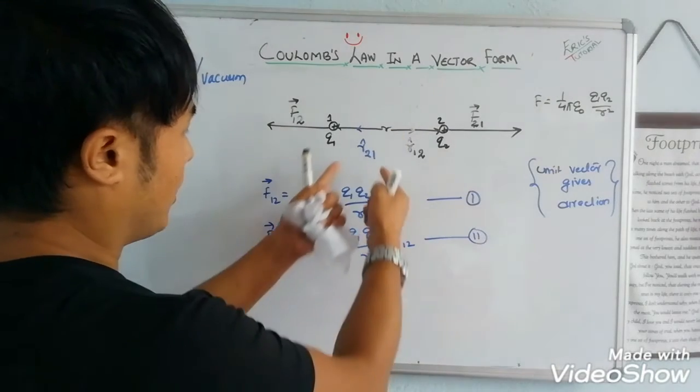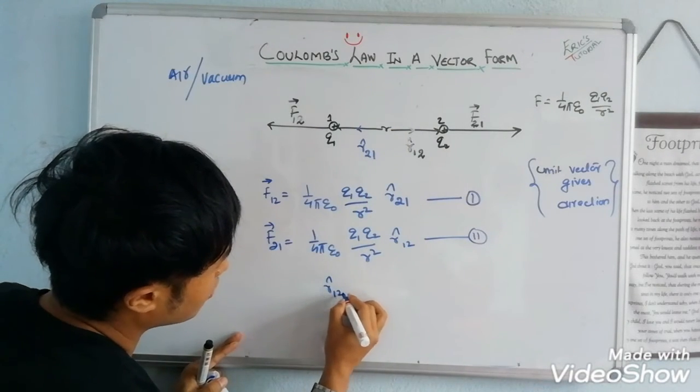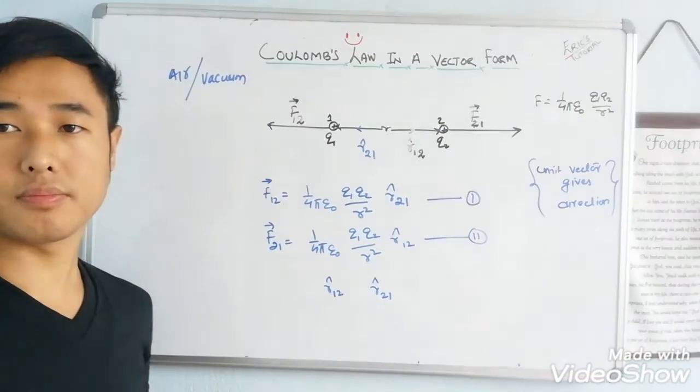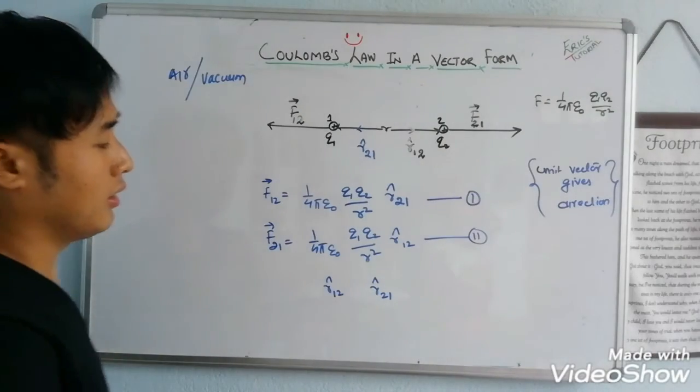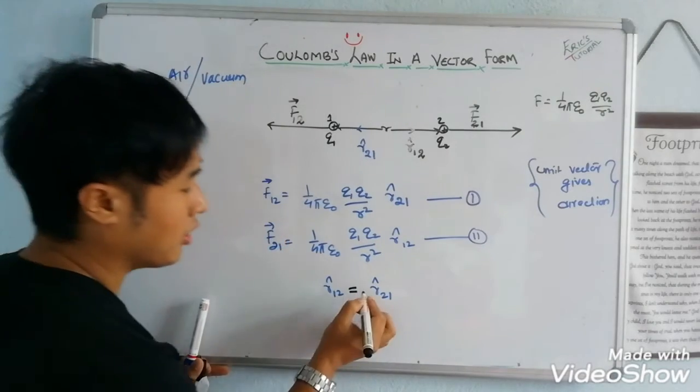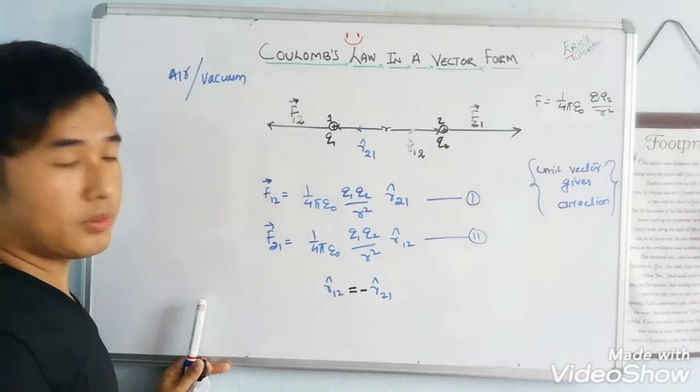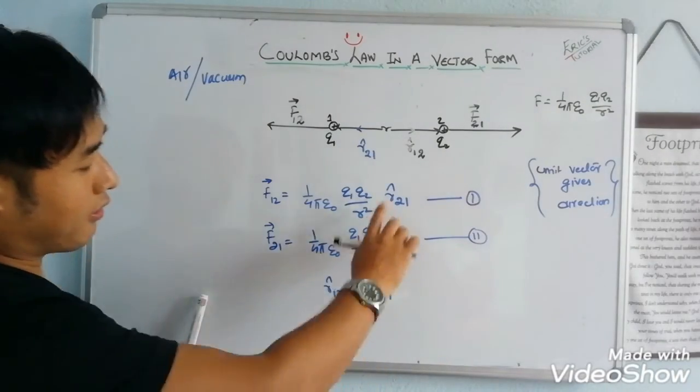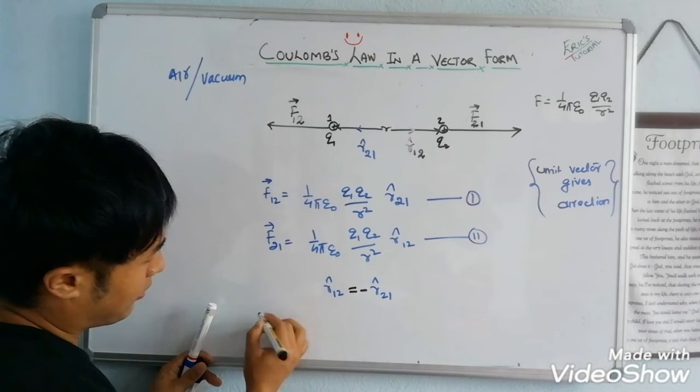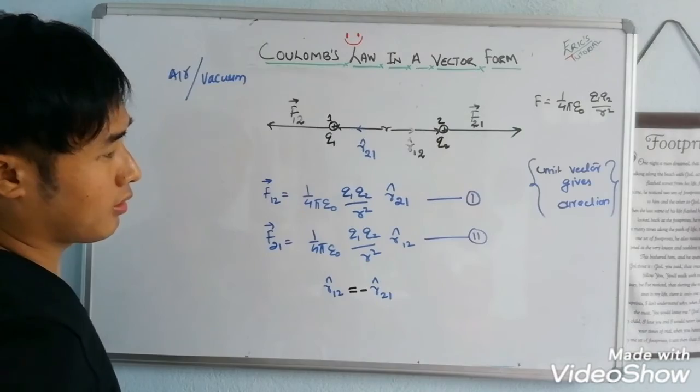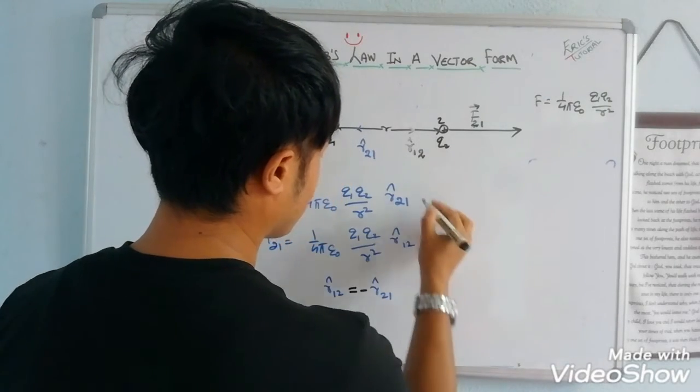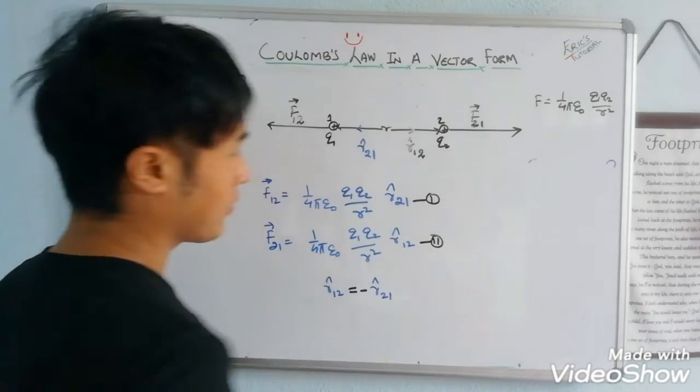Now, R cap 1,2 and R cap 2,1, these unit vectors are equal in magnitude but opposite in direction. So we can write one in terms of the other. We can replace this in equation 2. This one is my equation 1, this one is my equation 2.